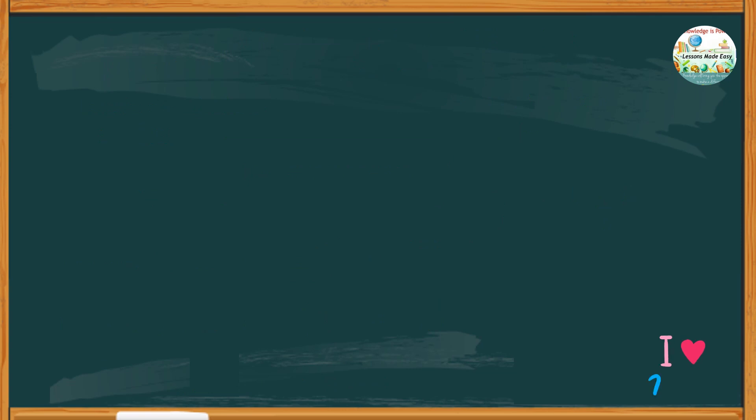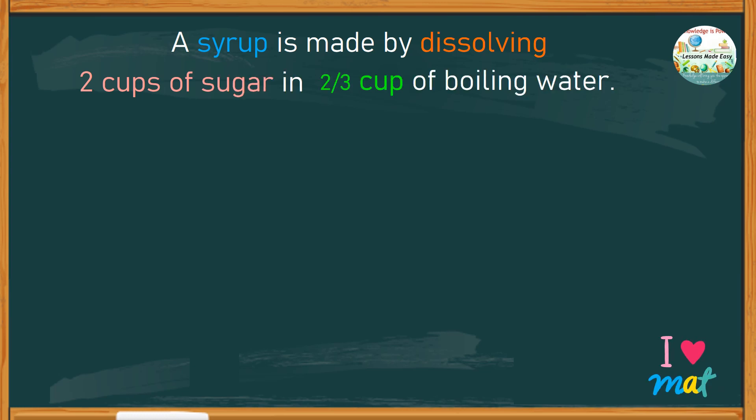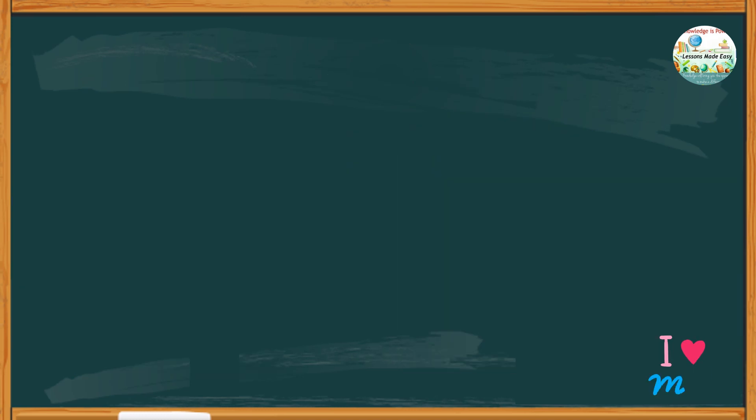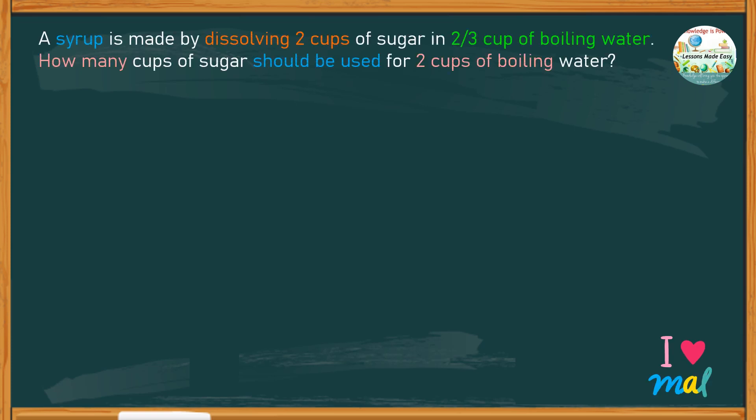Let's try another problem. A syrup is made by dissolving 2 cups of sugar in 2 thirds cup of boiling water. How many cups of sugar should be used for 2 cups of boiling water? Looking at the facts given in the problem,